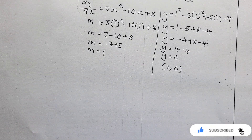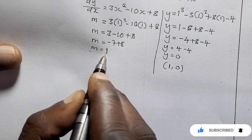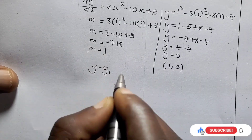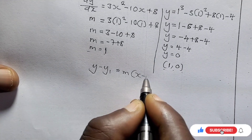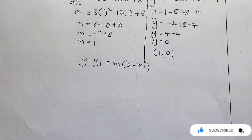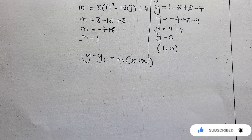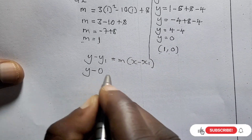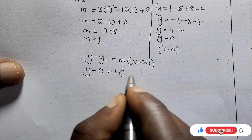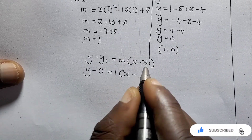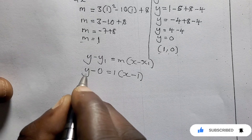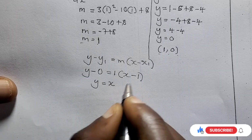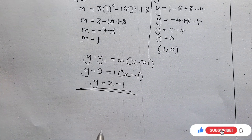Now we find the equation of the tangent using y minus y1 equals m(x minus x1). Substituting: y minus 0 equals 1 times (x minus 1). Expanding: y equals x minus 1. This is the equation of the tangent.